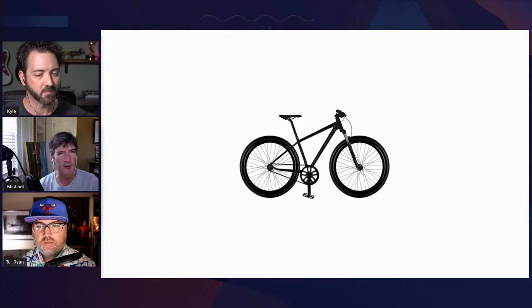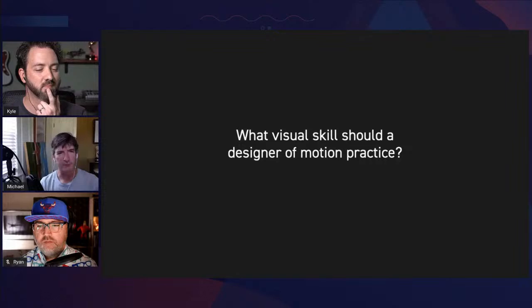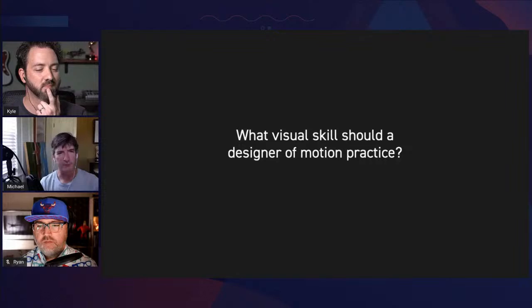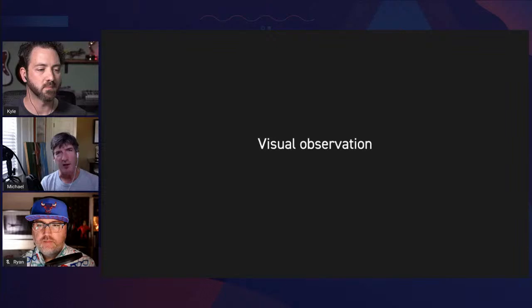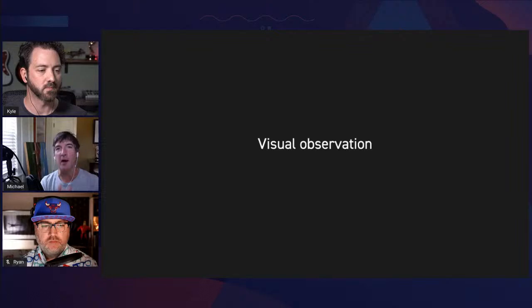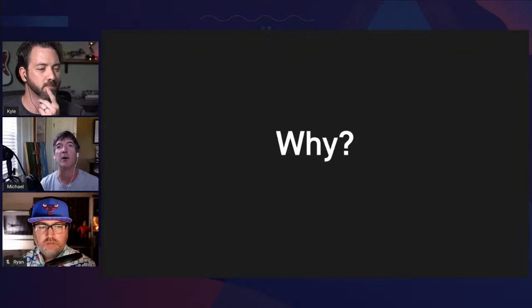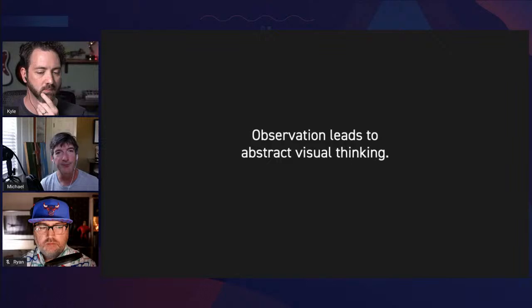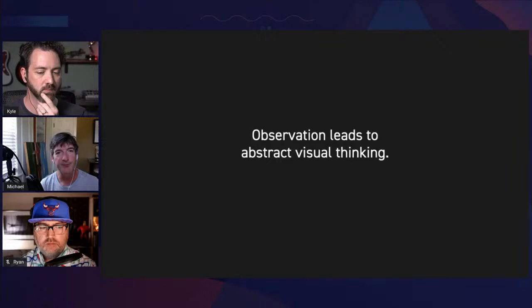What visual skill should a designer of motion practice the most? Visual observation. Observation is one of those things where when you slow down and you start to see, you start to see new abstract relationships, and you start to make discoveries in your brain because your eye is seeing form in a new way — seeing it as what it is: form, abstract language, form language.